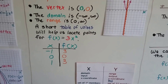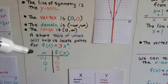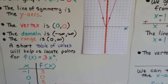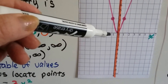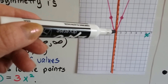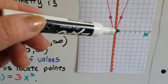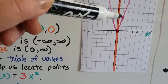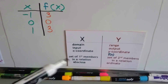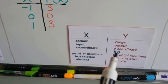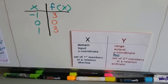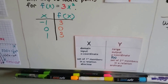A short table of values helps us locate points for f(x) equals 3x squared. When x is negative 1, f(x) is 3. When x is 0, f(x) is 0. When x is 1, f(x) is positive 3. Remember, there are a lot of different names: the function of x is the y value — x is the domain, the input, the x-coordinate; f(x) is the range, the output, the y-coordinate.